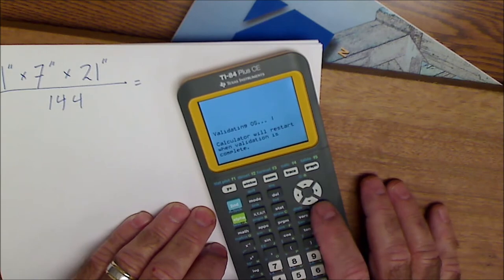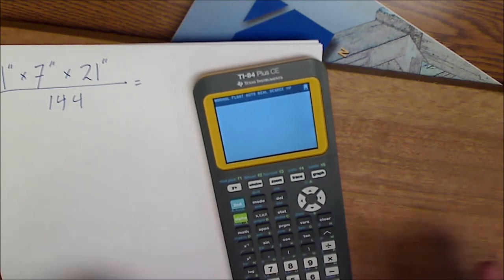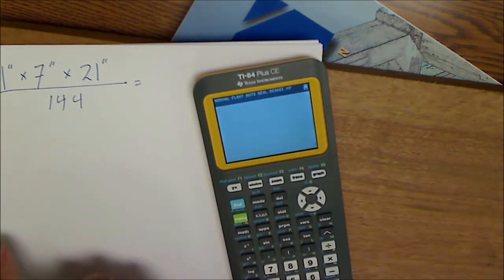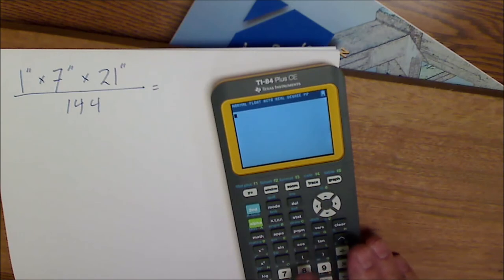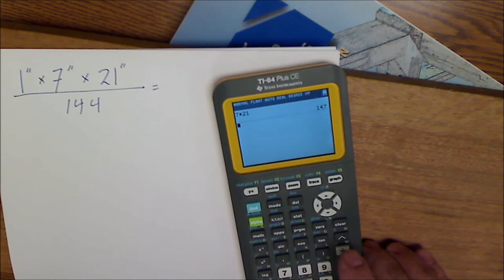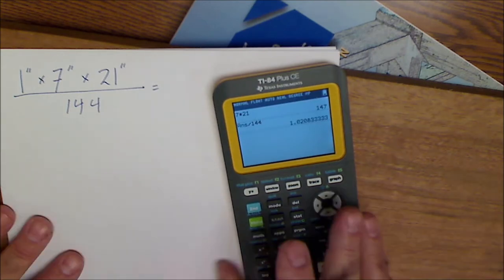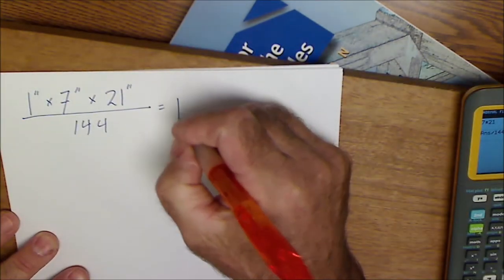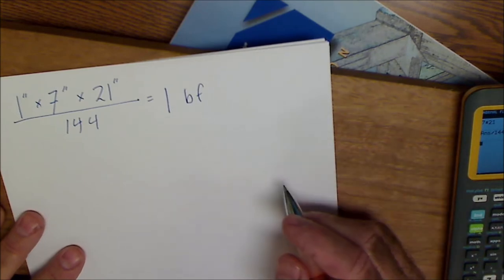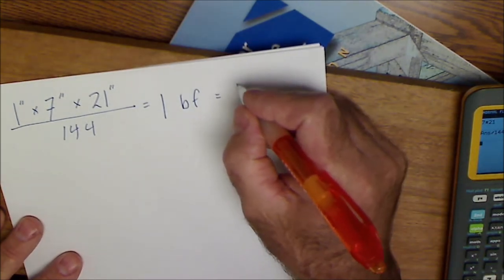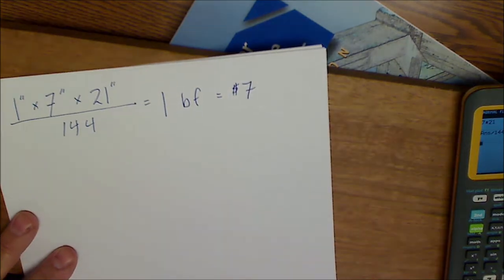So this is hardwood, which is probably easier because it's not a linear measurement in feet. The linear measurement's in inches already and that's why I'm dividing it by 144. So I go one times seven times 21 divided by 144 and it's 1.02 or just about one board foot. So this is one board foot. And mahogany is usually about seven dollars a board foot. So this is the equivalent of about seven bucks.